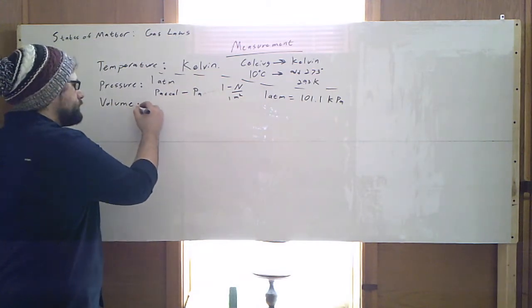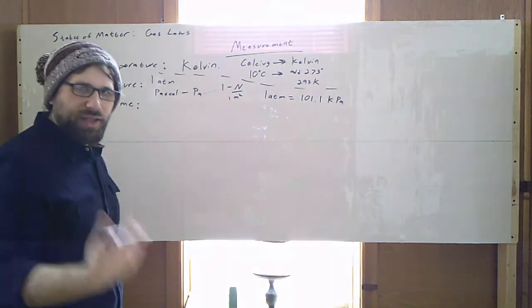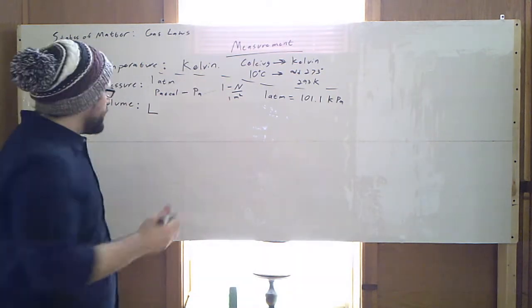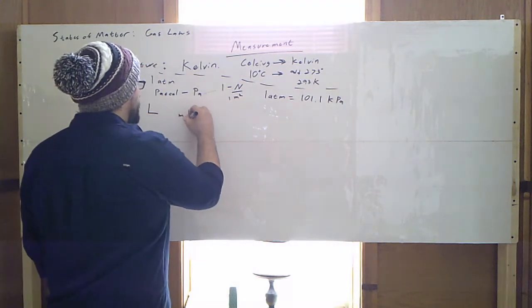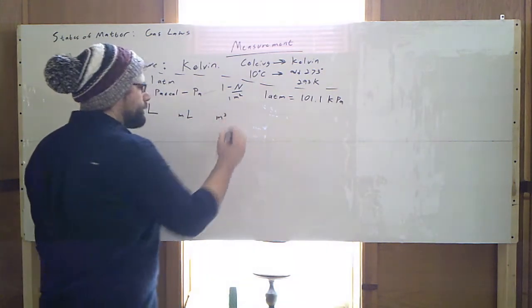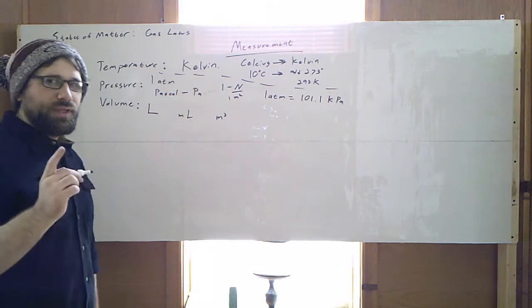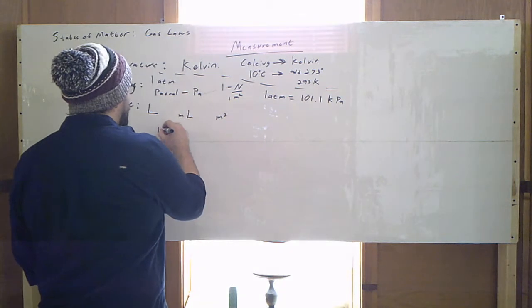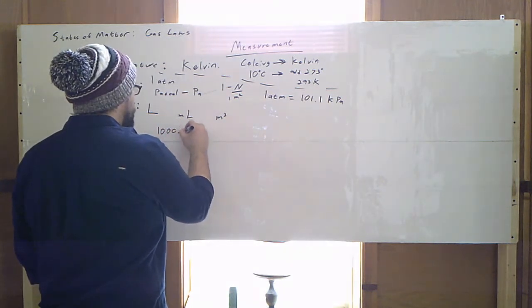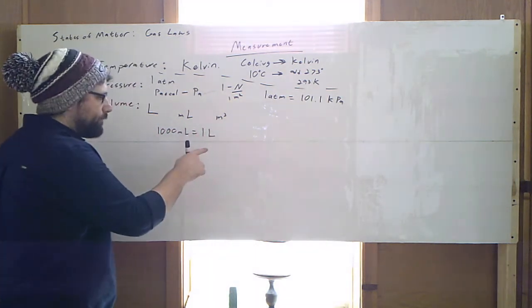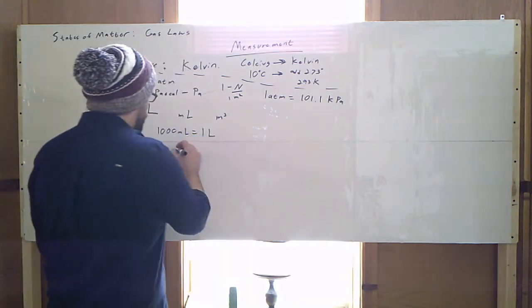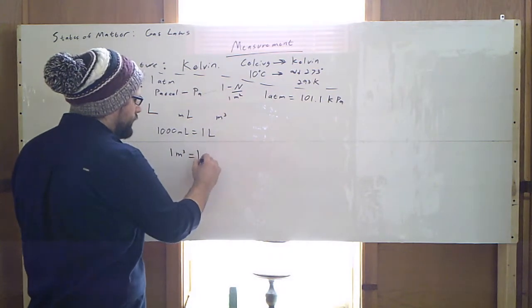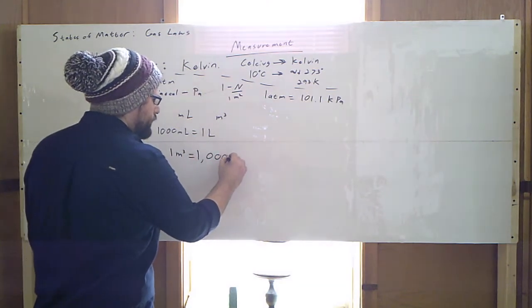And then volume. This one's nice and simple. We already have it. We already use it. We're going to use volume in liters. We could also use milliliters. We could also use cubic meters. The conversion between these three is actually quite simple. There are 1,000 milliliters in one liter. We should already know that. And then one cubic meter is equal to 1,000 liters.